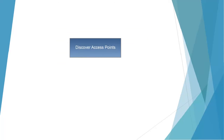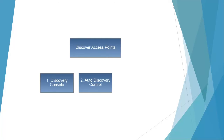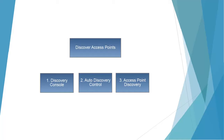Discovery of the access points can be done in three ways. One, through the discovery console of CA Spectrum. Second, through the auto discovery control option in the one-click console of CA Spectrum. Third, through the create wireless access points option available in the configuration section. This will work to model all the access points for which the wireless controllers are already discovered under the WLC Manager.